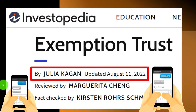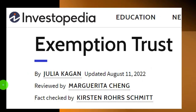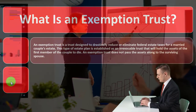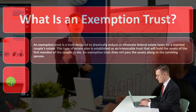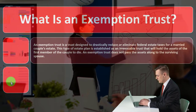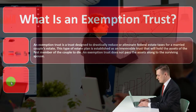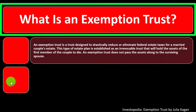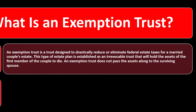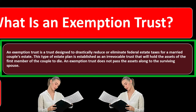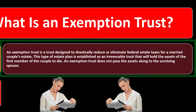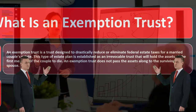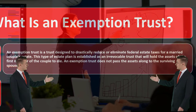This article is by Julia Kagan, updated August 11, 2022. In prior presentations we've been taking a look at estate planning, focusing on particular tools that could be used in it — this time, the exemption trust. So the first question is: what is an exemption trust? An exemption trust is a trust designed to drastically reduce or eliminate federal estate taxes for a married couple's estate.